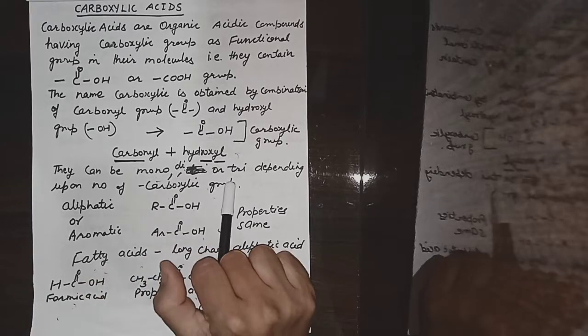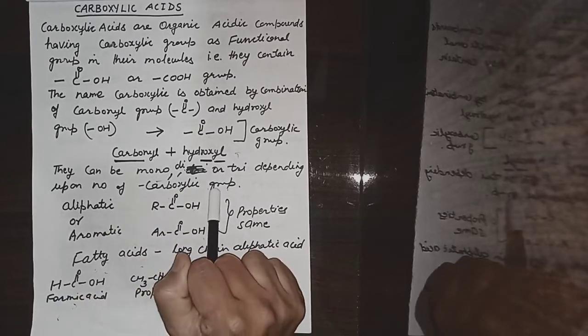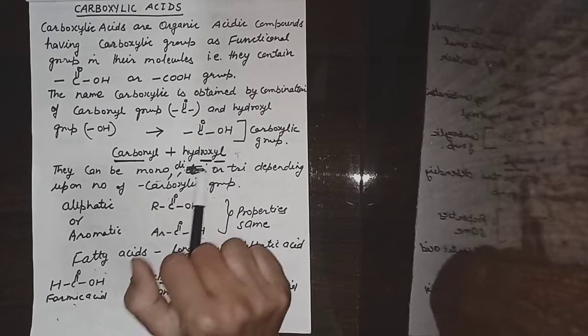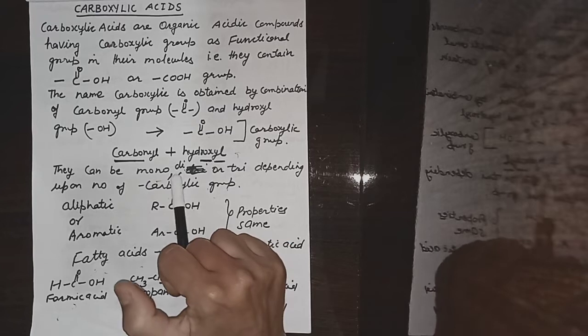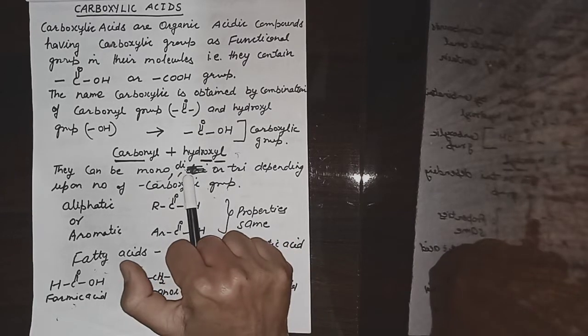Carboxylic acids can be mono, di, or tri depending upon the number of carboxylic groups present. If one carboxylic group is present we call them monocarboxylic acid, if two carboxylic groups are present we call them dicarboxylic acid, and so on.